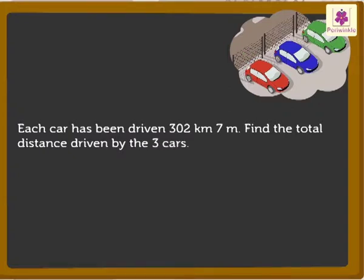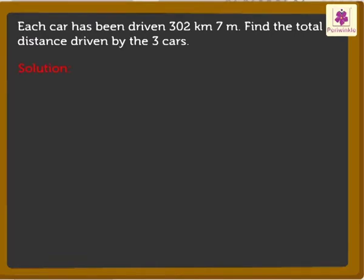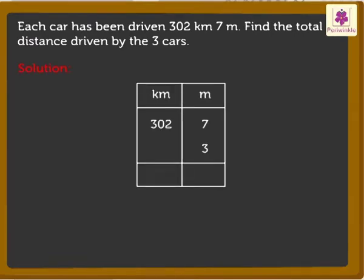It would be easy to find that as we already know the multiplication rules. First, write the numbers in the kilometer and meter columns. Now, multiply the digit in the meters column with 3.